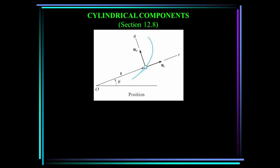First we'll talk about cylindrical components. In 2D we have a vector R at some angle theta that defines the position of a particle in this plane. We have unit vectors u sub r and u sub theta pointing in the directions shown. We can write R as a vector equal to the magnitude of R times the unit vector in the R direction. We call R the radial direction and theta the transverse direction.